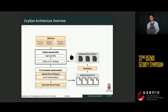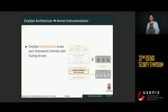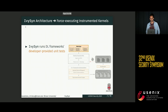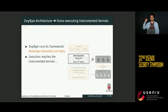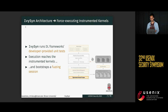Ivysyn consists of multiple subcomponents that interact with each other to eventually produce these POVs. The first thing Ivysyn does is locate each framework's kernels — the native functions that implement the operations of the framework — and automatically wrap them with special fuzzing drivers that are responsible for calling Ivysyn's fuzzer and fuzzing the corresponding wrapped kernel. Next, Ivysyn runs the developer-provided unit tests that come with each framework and are used to test the high-level Python APIs. When such a test is invoked, execution starts from a high-level API and flows down to the native implementation where Ivysyn injected its wrappers, and then calls Ivysyn's fuzzer to bootstrap a fuzzing session.